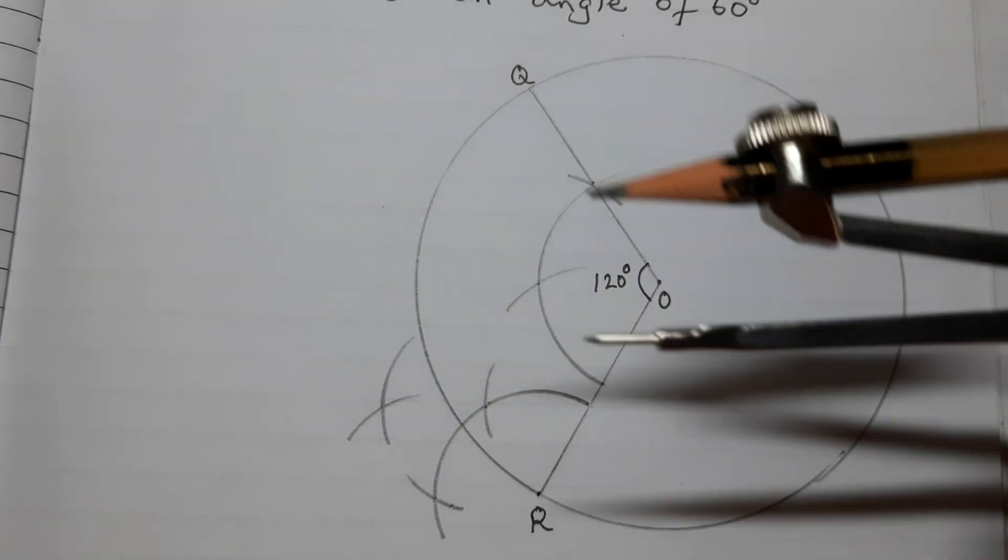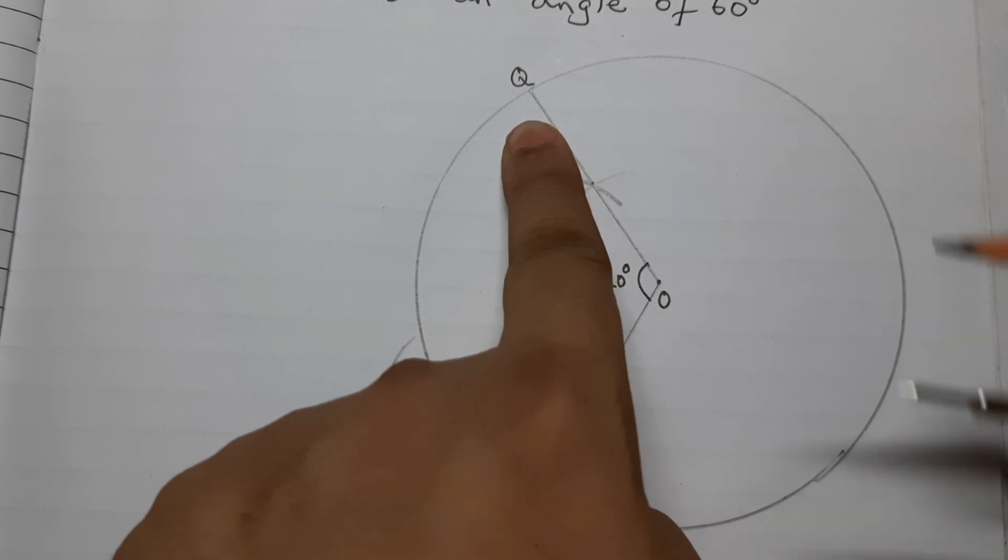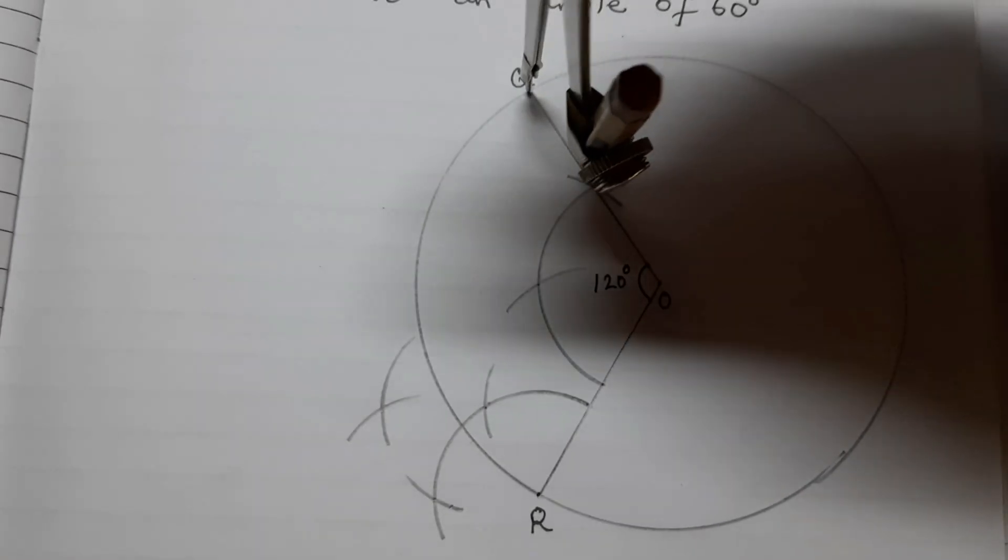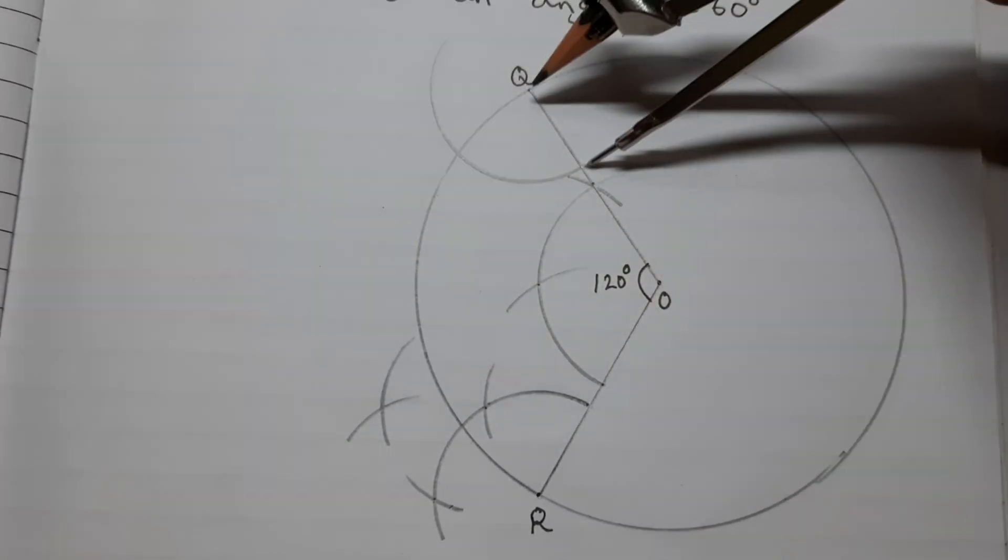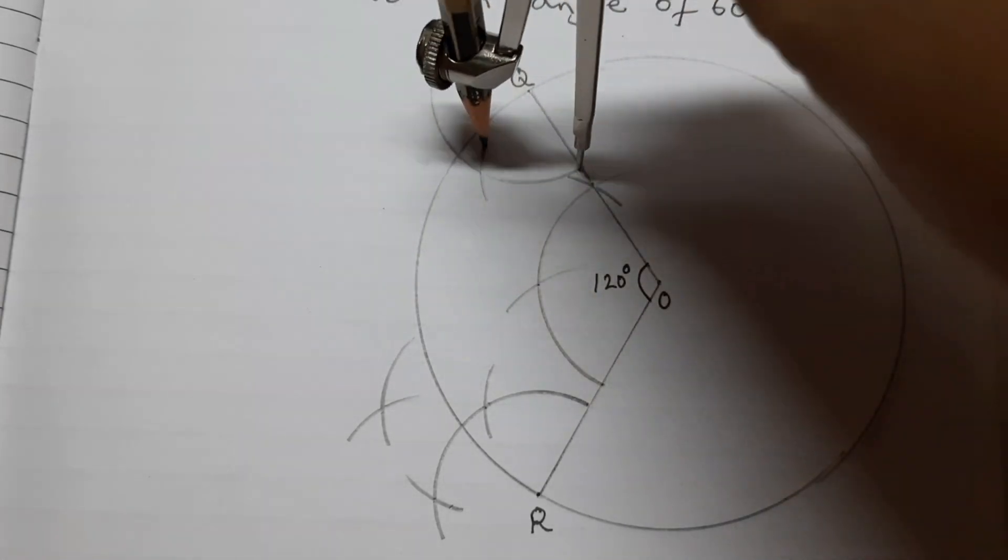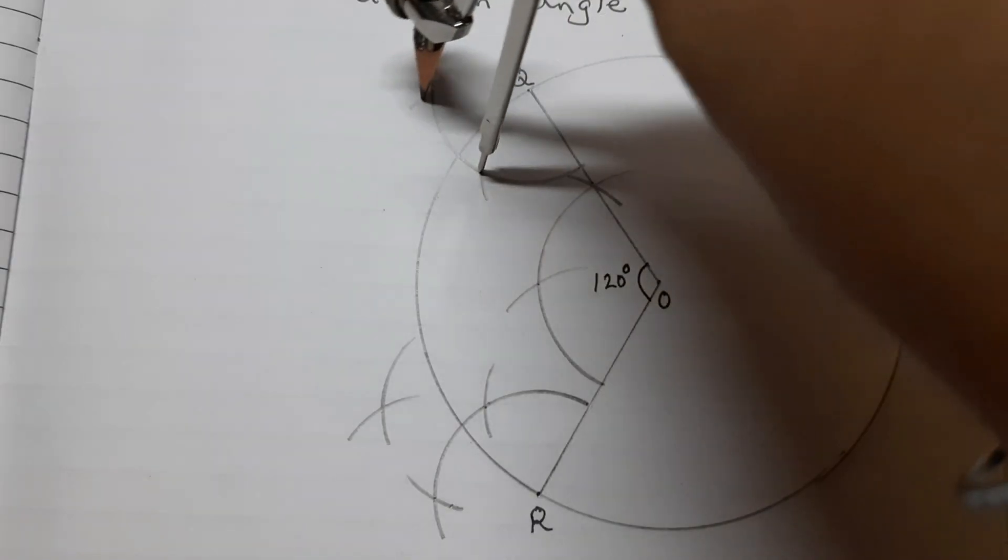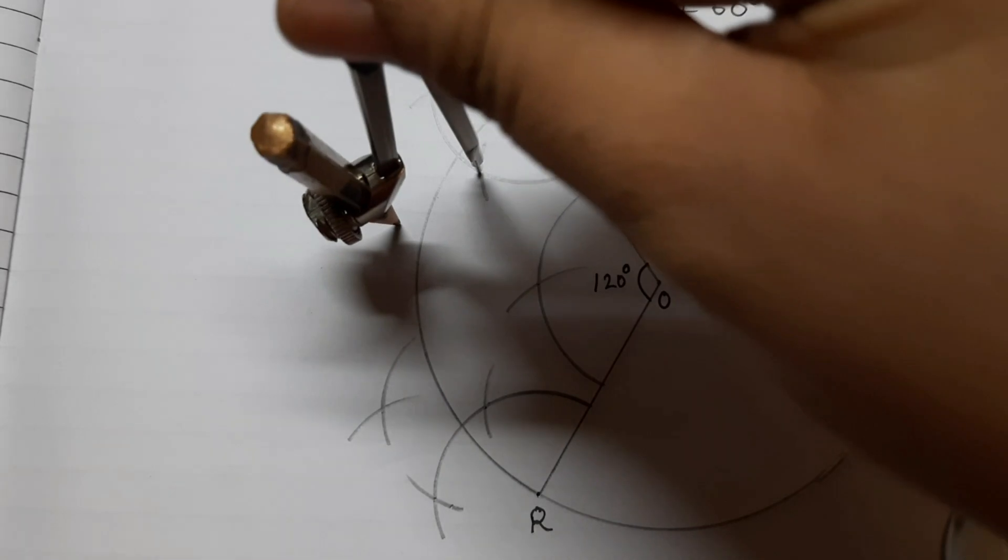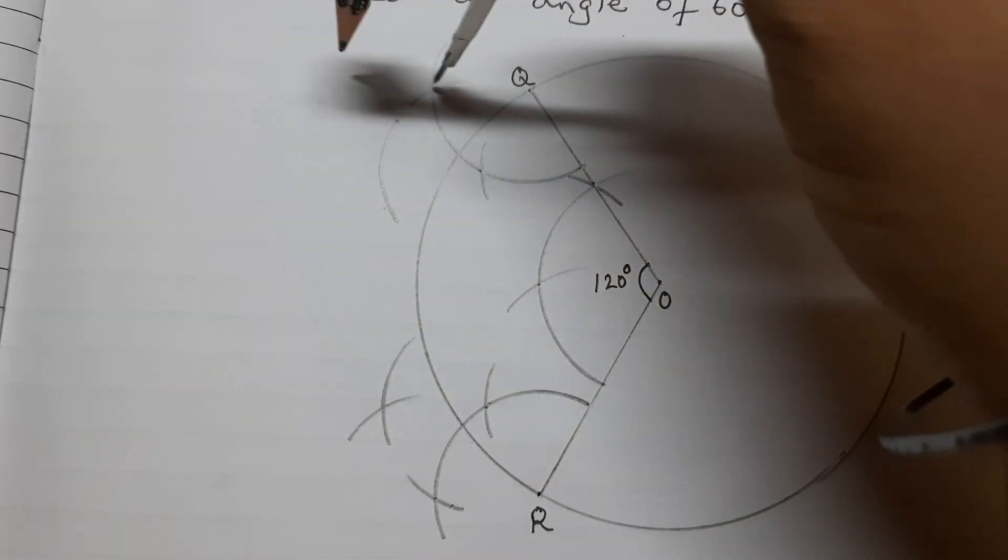Same way we have to do at point Q. We have to draw a 90 degree angle. Draw an arc. Keep the pointer here. First arc, second arc, and in between 90 degrees. So make arc like this.